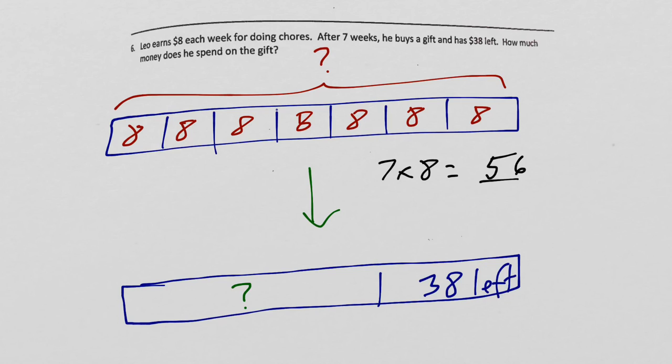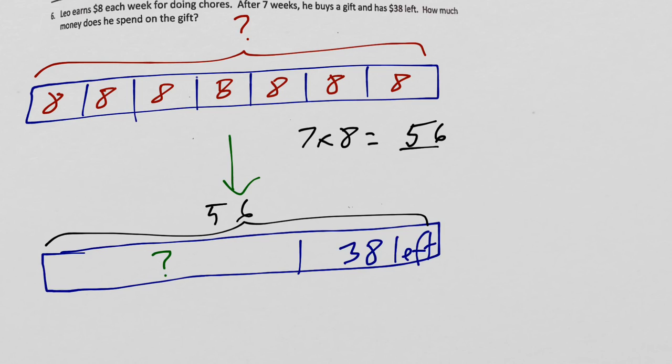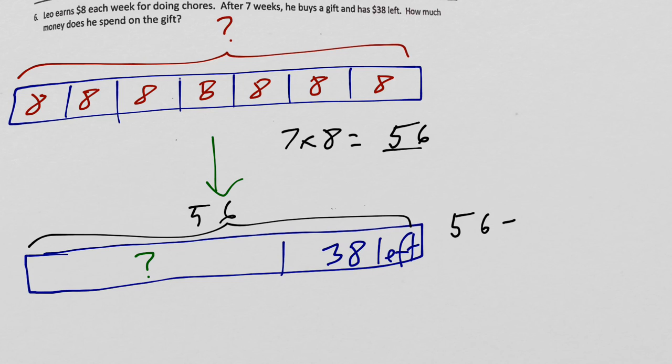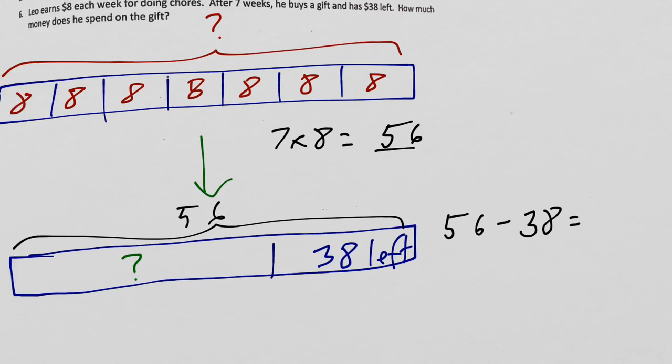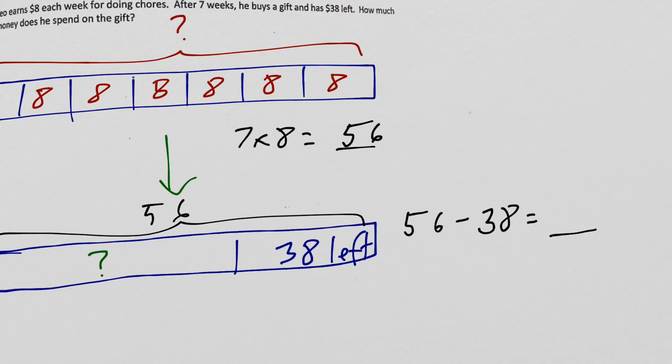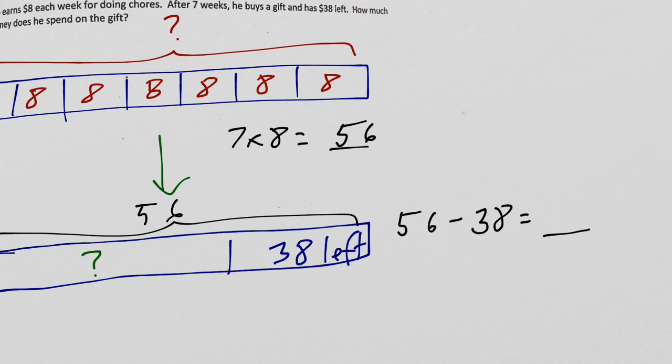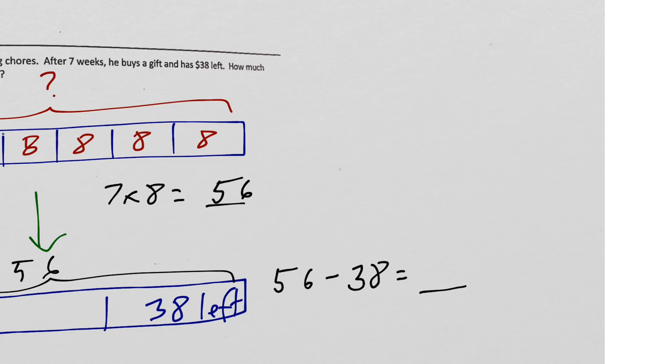So now, I know that this whole tape diagram is worth 56 because that's the amount of money he had. To solve the problem, I have to find out what the amount he spent is. He had $56 and he had left $38. So I know that whatever he spent is going to be 56 minus 38.